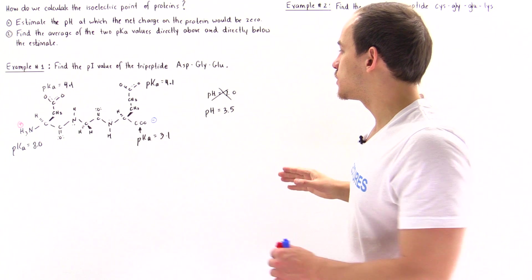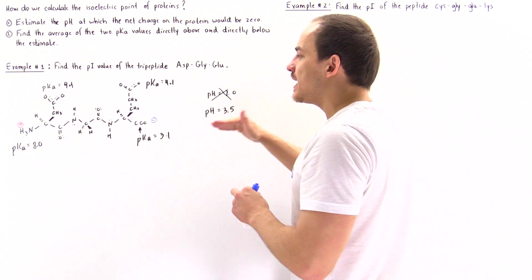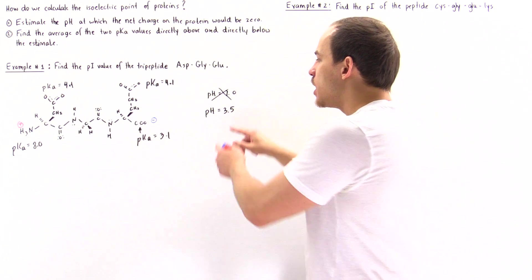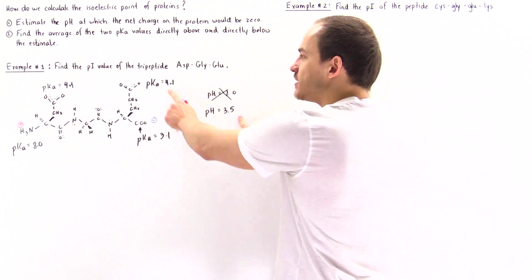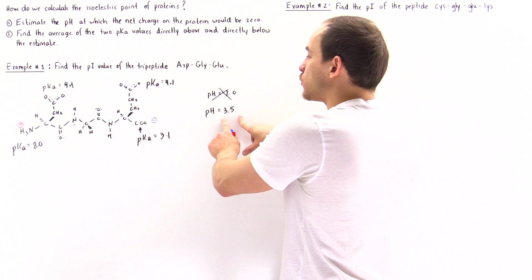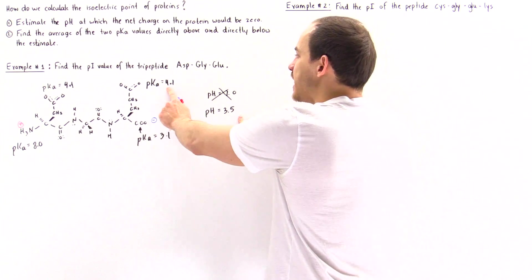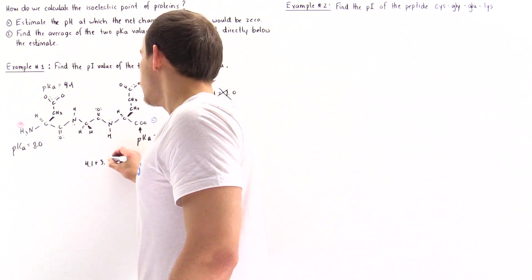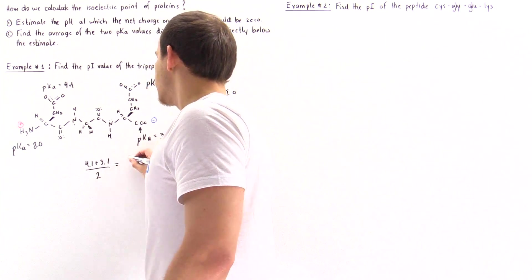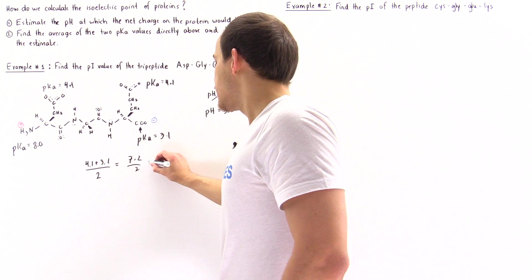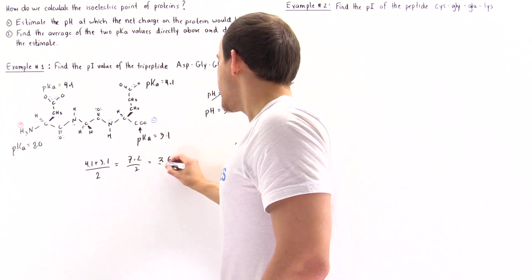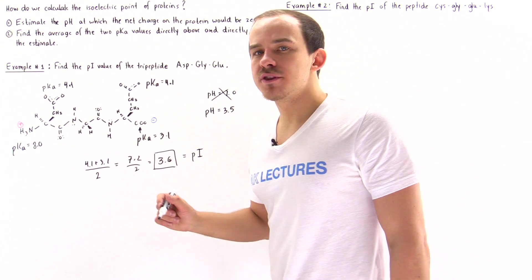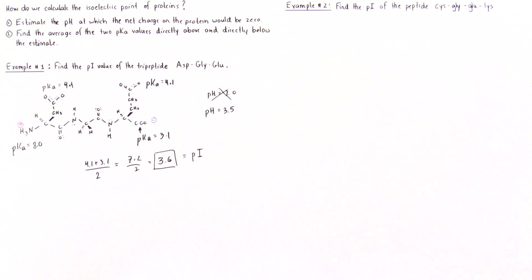Now for step two: take the estimated pH of 3.5 and find the pKa values directly above and below it. The pKa directly above 3.5 is 4.1, and the pKa directly below it is 3.1. Averaging these: (4.1 + 3.1) / 2 = 7.2 / 2 = 3.6. The isoelectric point, PI, for this tripeptide is 3.6.